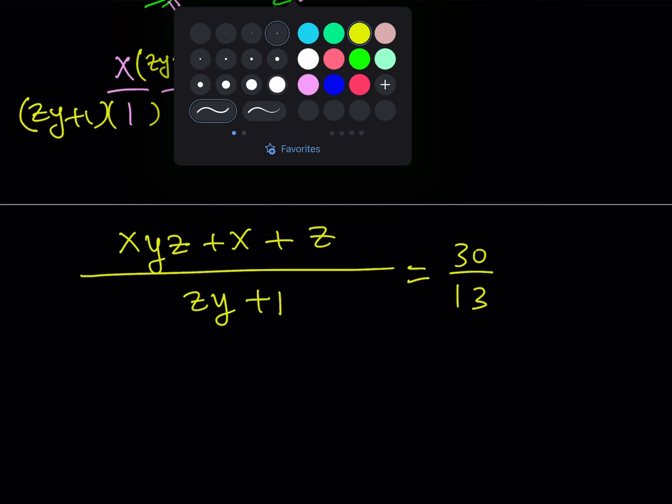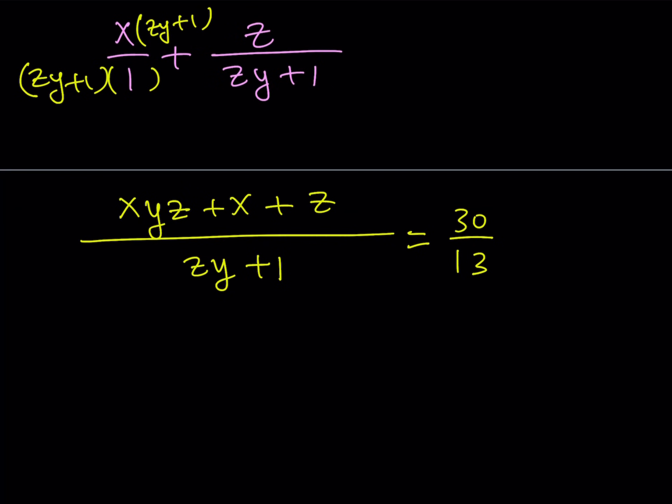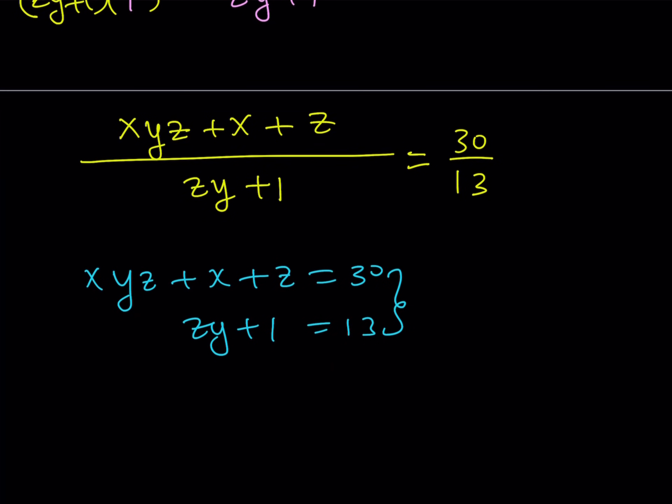So let's go ahead and do that. Let's see what happens. So I get xyz plus x plus z is equal to 30, and zy plus 1 is equal to 13. Obviously this gives me a system of equations, which is fairly easy to solve, especially because x, y, z are integers. But look at the second equation. It's almost solved. If you subtract 1 from both sides, you're going to be getting something like zy is equal to 12. And that's something that can be used.